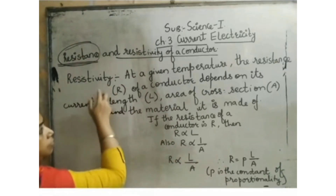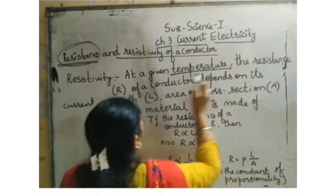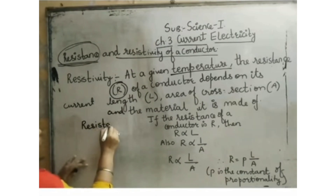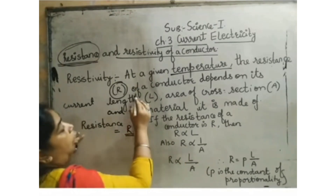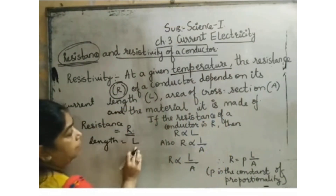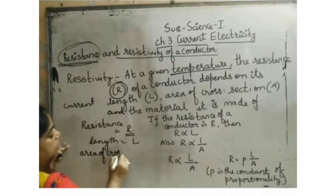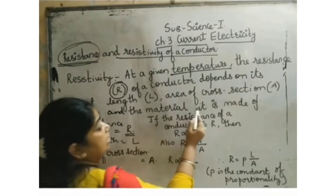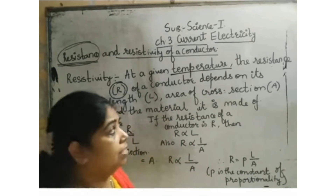According to resistance, we have resistivity also - like we have learnt about Ohm's Law in our previous lecture. According to Ohm's Law, we have learnt what is the derivation of Ohm's Law. Today we are going to learn about what is resistivity of a conductor. Resistance is denoted by capital R. Of a conductor, it depends on its length, which is capital L, area of cross section, which is always denoted by capital A, and the material it is made up of - like iron or copper.